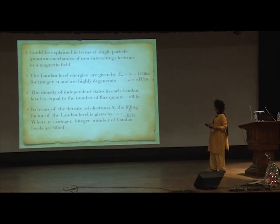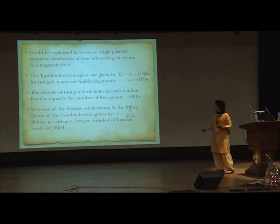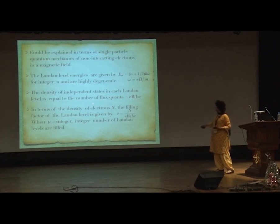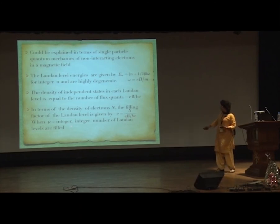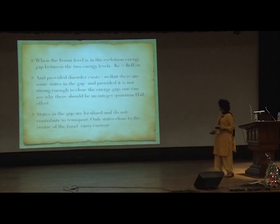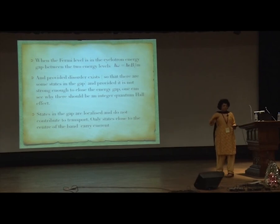The integer quantum Hall effect can be explained in terms of single-particle quantum mechanics of non-interacting electrons in a magnetic field — the Landau level problem. Landau level energies are given by E_n = (n + 1/2) ℏω_c, where ω_c = eB/m is the cyclotron frequency. The Landau levels are highly degenerate; the density of states in each level is eB/hc. The filling factor ν = n/(eB/hc), and whenever ν is an integer, an integer number of Landau levels are filled, giving stability to the system. When the Fermi level is in the cyclotron gap and moderate disorder exists to fill gap states without closing it, that is when you get quantum Hall effect.